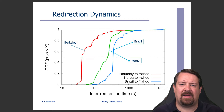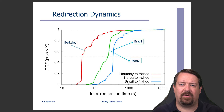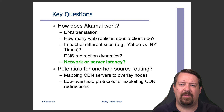Another thing we can measure is the time between redirections. A PlanetLab node performs a query and gets the same result back repeatedly, and then after some period of time it gets a new result. Looking at the time between those changes, for the Berkeley location it was typically around 20 seconds. However, for Korea and Brazil it was commonly between 1 and 200 seconds. This could inform how often a new query should be performed in order to get current results without performing excess queries.